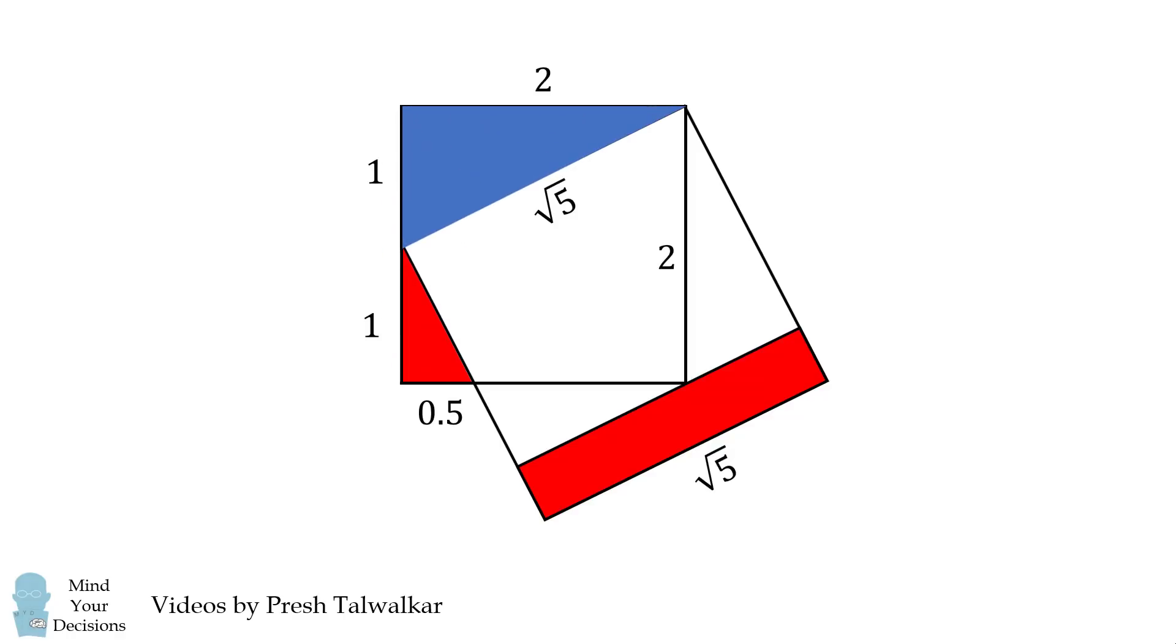Furthermore, we have another similar triangle, this triangle right here. If we label the longer leg as a, then we have a divided by 2 has to be the same ratio as in this triangle here which is equal to 2 divided by the square root of 5. We simplify this and we get that a is equal to 4 divided by the square root of 5.